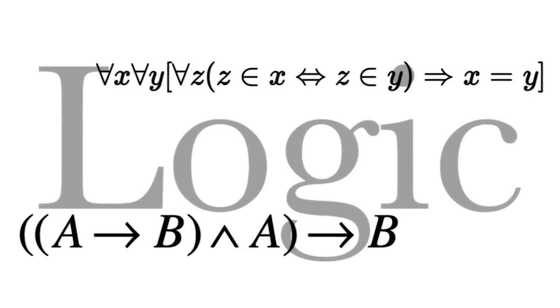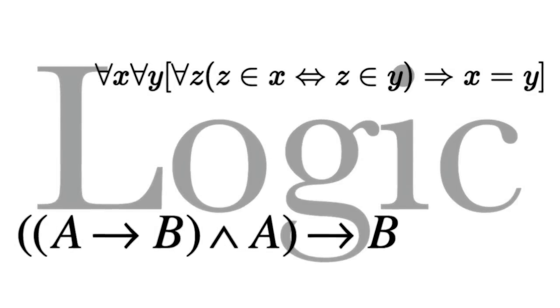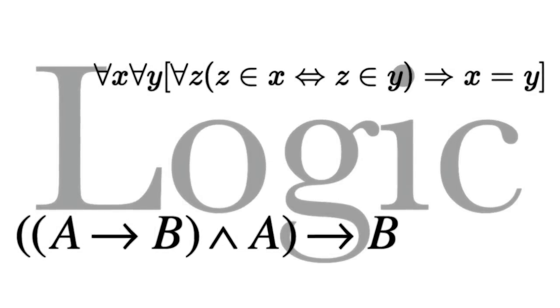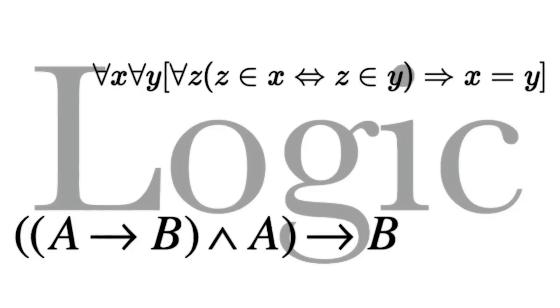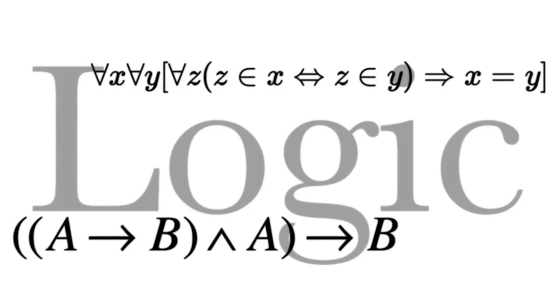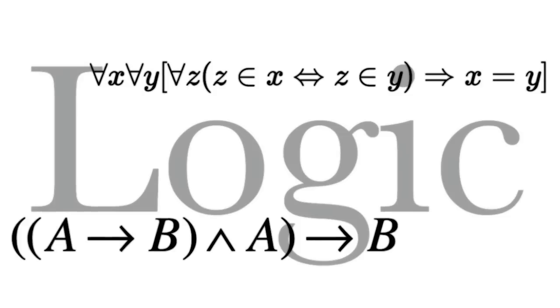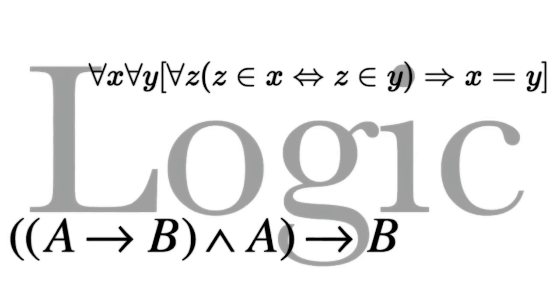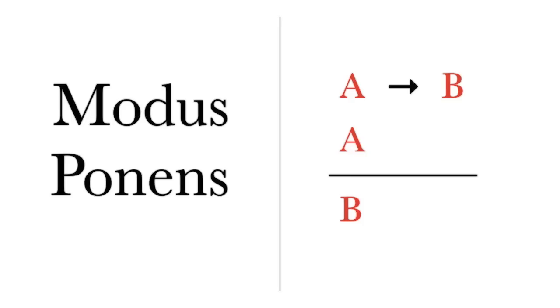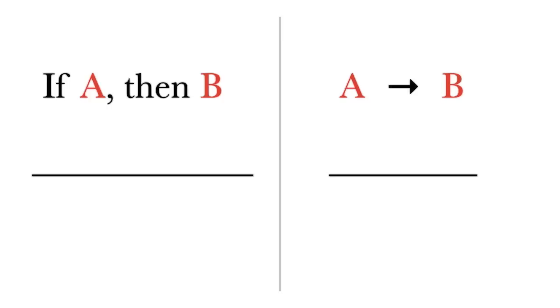But what about logic? Logic isn't based on evidence, is it? And mathematics is based on logic. On the contrary, I think it is pretty clear that logic also is ultimately just an abstraction of physical experience based on physical evidence. Let's take modus ponens, for example: if A then B, A, therefore B.